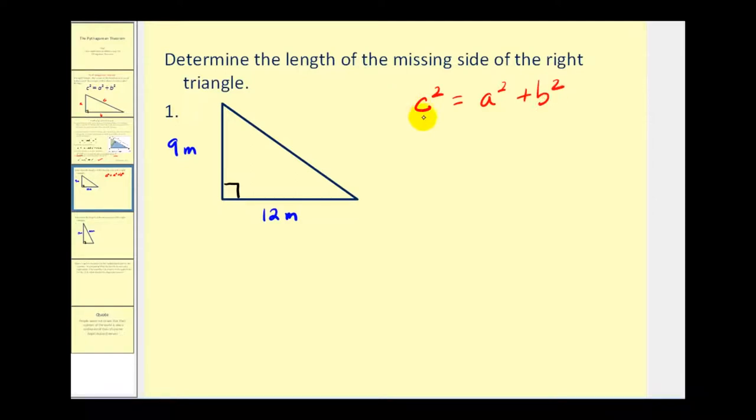C must be the hypotenuse, which is this side here, because it's opposite the right angle. And these two would be the legs, so we'll label these A and B.